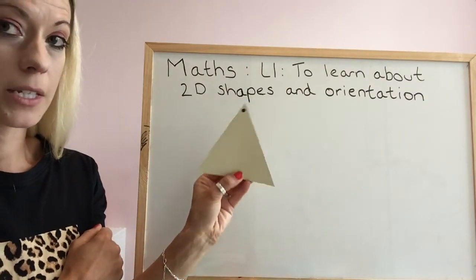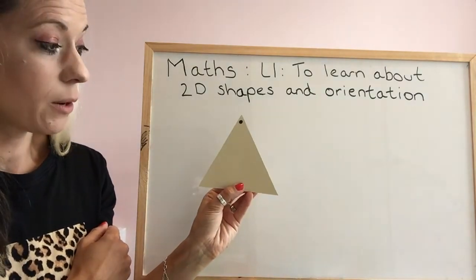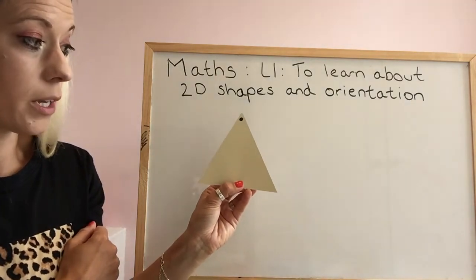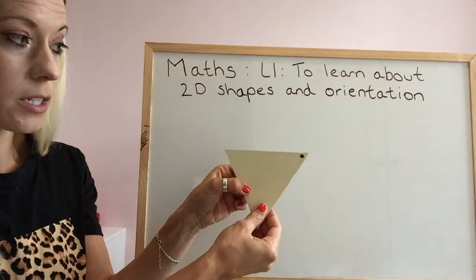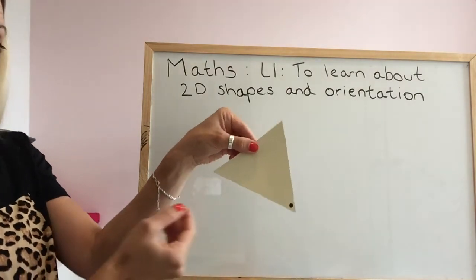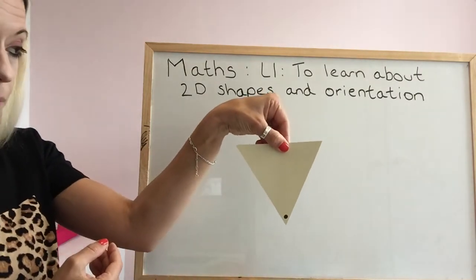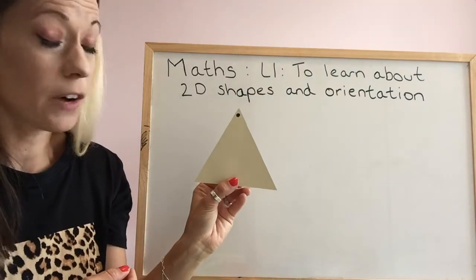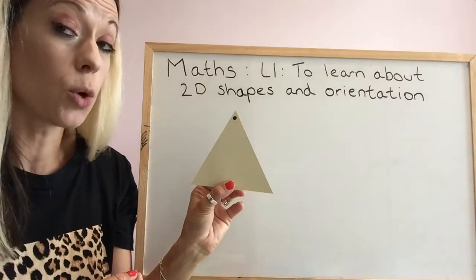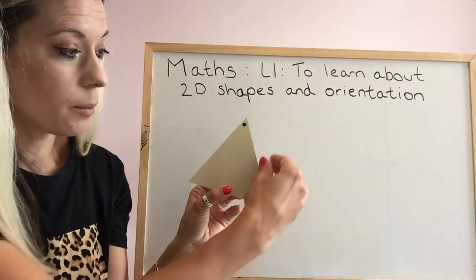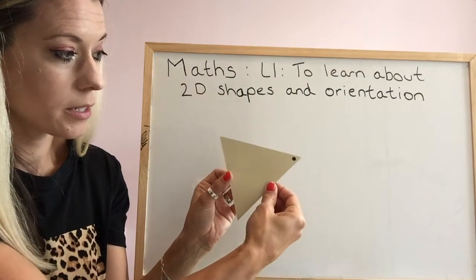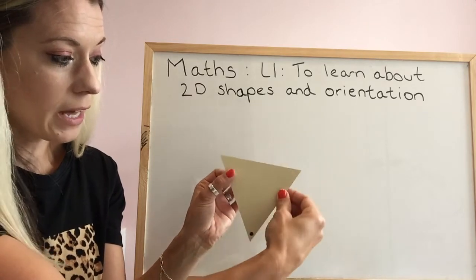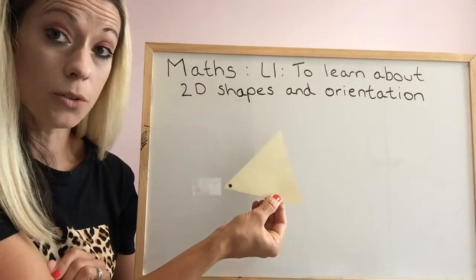Now go back to the start. If I was to turn it a half turn going clockwise, I would rotate my shape to look like that. Go back to the start. If I were to rotate it three quarters clockwise — that's just gone quarter, that's gone half, and that is three quarters.